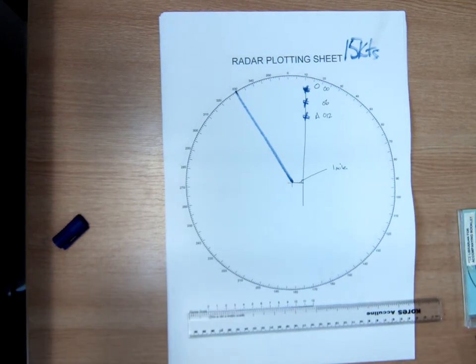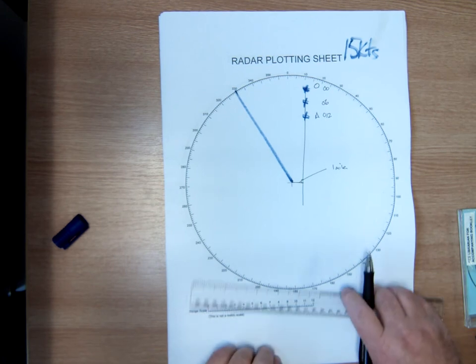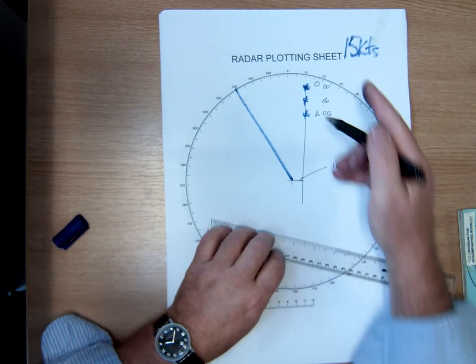So that distance there is just one mile. Would you think that in restricted visibility that would be a good idea? So let's actually see what she's actually doing.